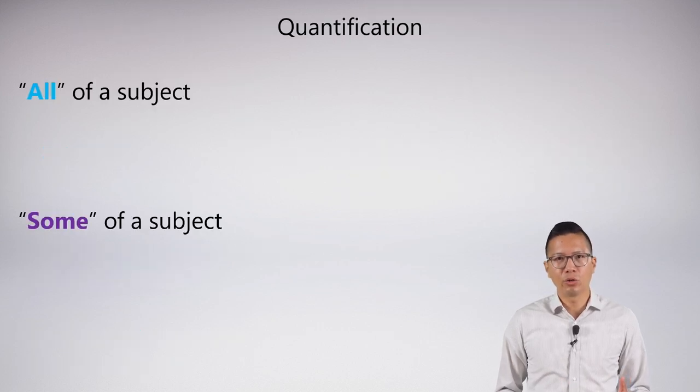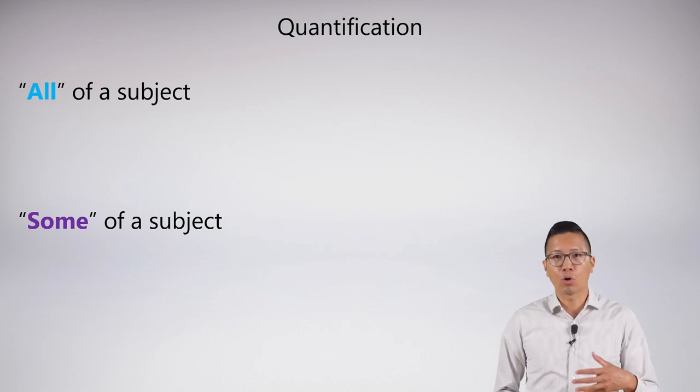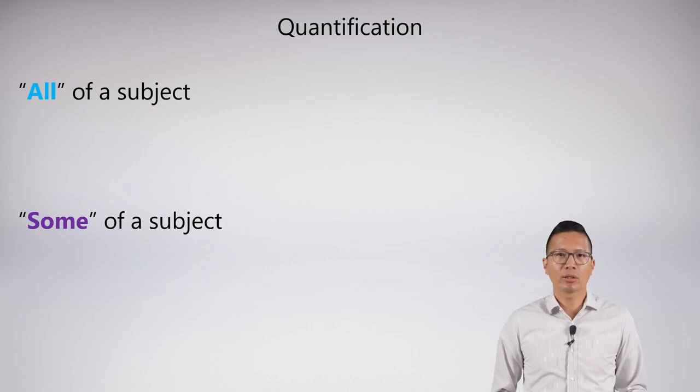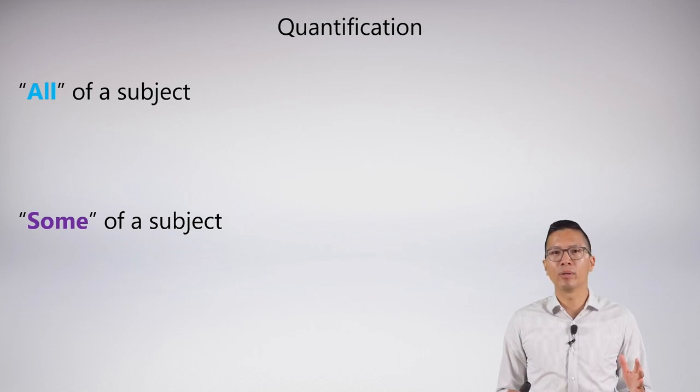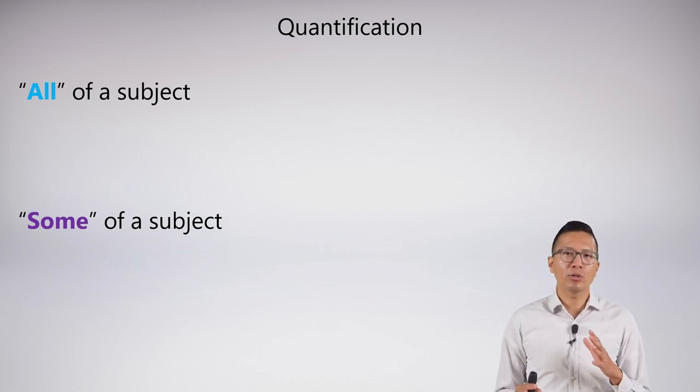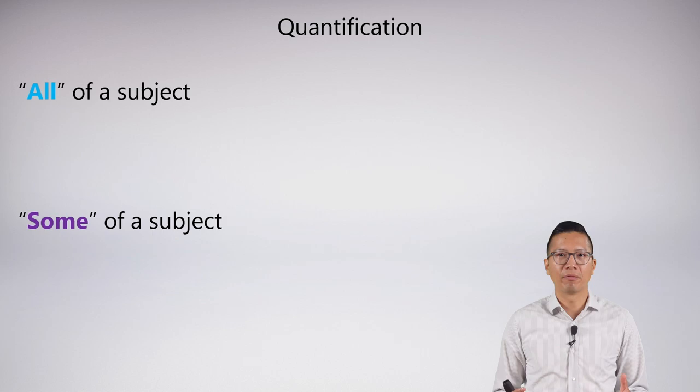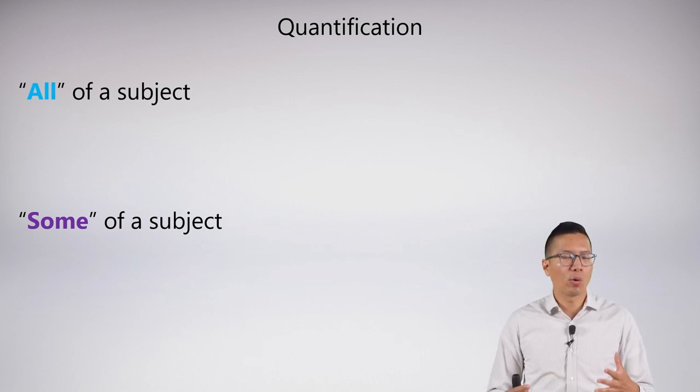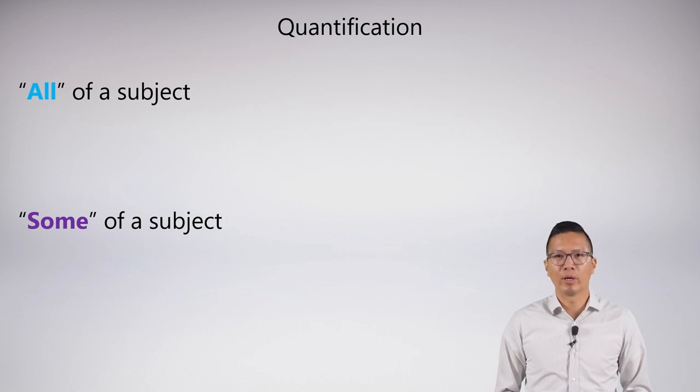What we're looking to introduce is the concept of quantification. Quantification allows us to talk about a quantity of a particular subject. I can say all of a subject or some of a subject. You might think there are other important quantities out there that we will want to be able to express. But it turns out that our system will be powerful enough to express all the quantities that we could want just in virtue of all, some, and of course we'll use negation as well. That'll be an important way to symbolize other quantities.